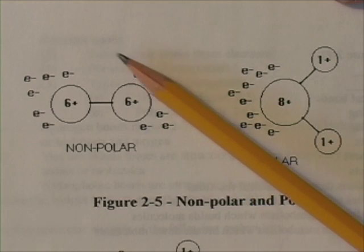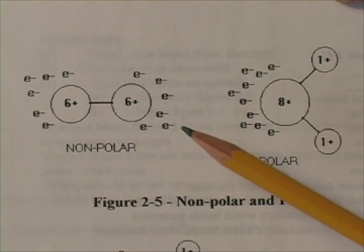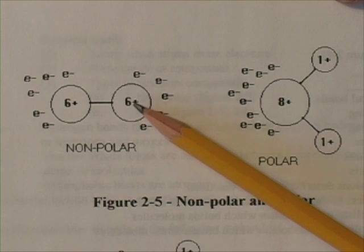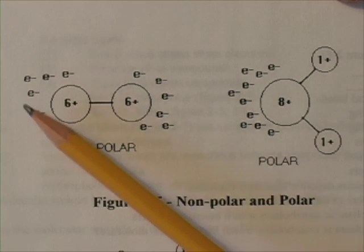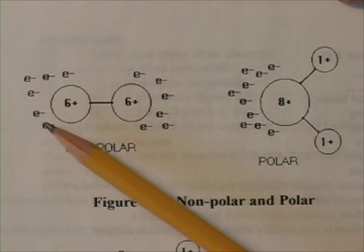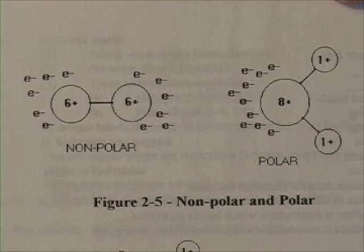Anyway, these electrons are loosely swarming around the two nuclei. Remember, opposite charges attract. So wouldn't this swarm of electrons be more or less evenly distributed around the two nuclei?